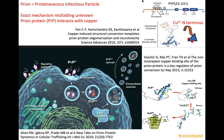A prion is an infectious particle that does not contain DNA or RNA — it's proteinaceous and located on the cell surface. Normal prions are recycled by endocytosis, and if you have one misfolded prion it can cause other prions to misfold as well. When they go back to the extracellular space, this is how prions can spread in tissues. The exact mechanism why a prion misfolds is not known.